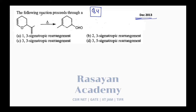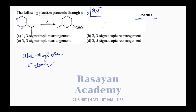Now we start questions from the December 2013 paper. Question 4: the following reaction proceeds through which mechanism? The best method is to identify that this is your allyl vinyl ether system. Check if it is a 1,5-diene system: 1, 2, 3, 4, 5 — absolutely a 1,5-diene, but there is an oxygen. When there is oxygen, check for the allyl vinyl ether system. This is the allyl part, this is the vinyl part.